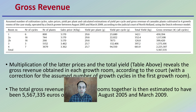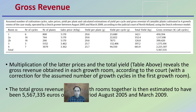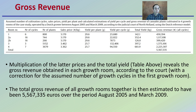They first looked at gross revenue for indoor grow operations. There were four rooms under investigation. They looked at room numbers, number of cycles, number of plants grown, and sales. This was in the Netherlands, so it is euros per kilogram. They also recorded yield per plant in grams, yield per cycle, total yield, and gross revenue.